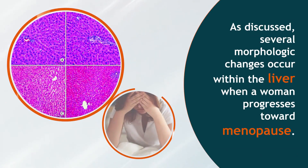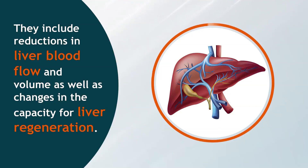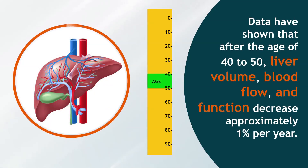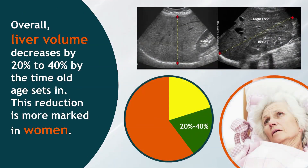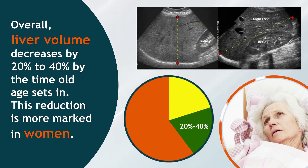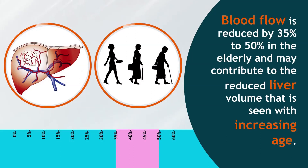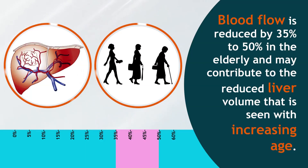Several morphologic changes occur within the liver when a woman progresses toward menopause, including reductions in liver blood flow and volume, as well as changes in the capacity for liver regeneration. Data have shown that after the age of 40 to 50, liver volume, blood flow, and function decrease approximately 1% per year. Overall liver volume decreases by 20% to 40% by the time old age sets in, with this reduction being more marked in women. Blood flow is reduced by 35% to 50% in the elderly.